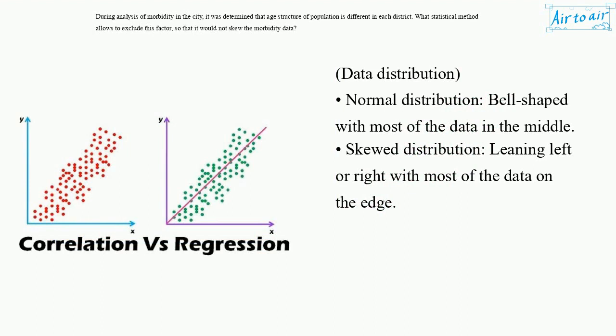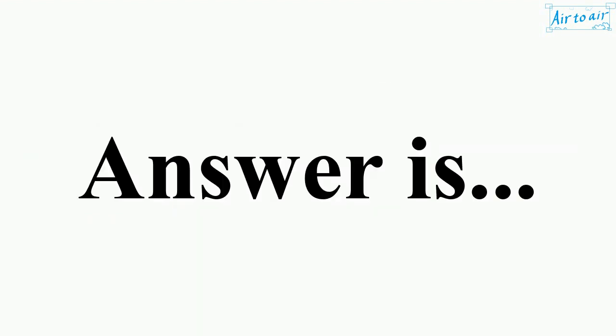Data distribution: normal distribution bell-shaped with most of the data in the middle. Skewed distribution leaning left or right with most of the data on the edge. The answer is